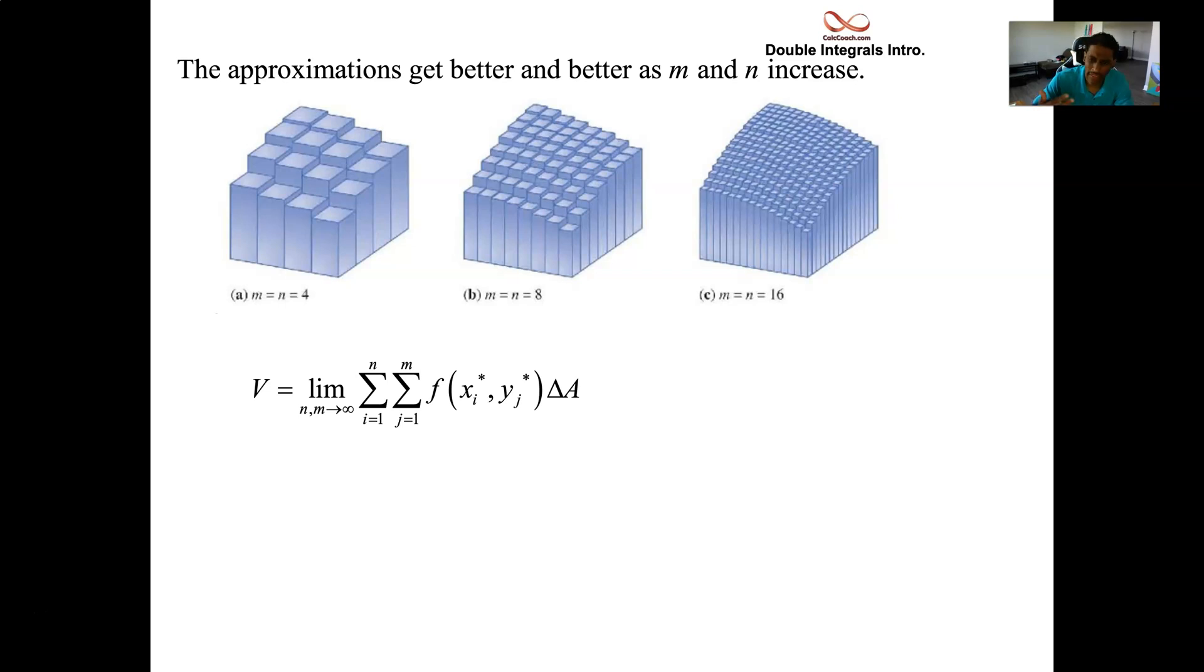And that will give us the exact answer. It won't be off. It won't be an approximation anymore. This is called a Riemann sum, but wait, it's a double Riemann sum. Both n and m are headed to infinity. So double Riemann sum leads to.